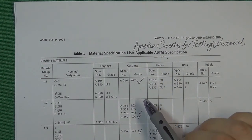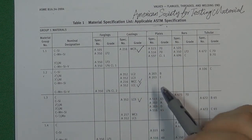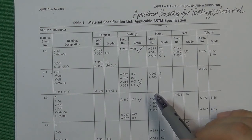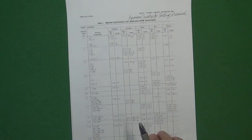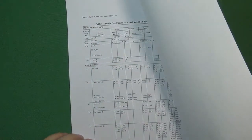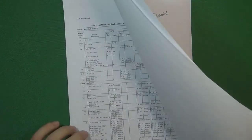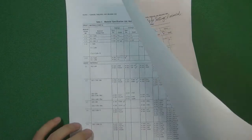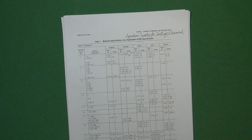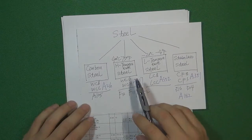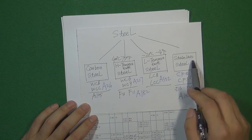All those material names are made by ASTAN. So let's talk about the material list in ASME 16.34. When you read this material list, you will find a lot of different materials included. We don't need to understand all those materials — it's very complicated. So commonly, we divide all the steel into four groups: carbon steel group, high-temperature steel group, low-temperature steel group, and the stainless steel group.